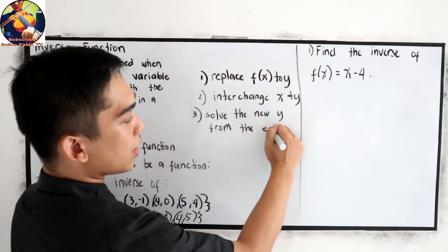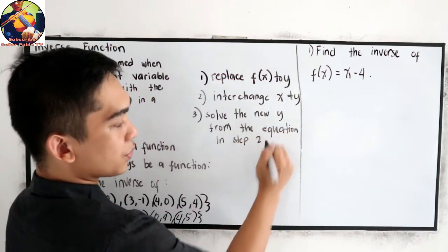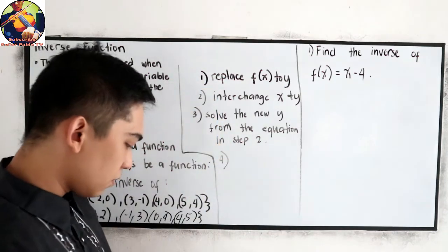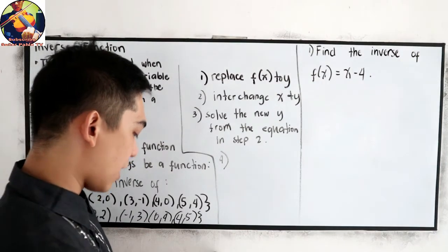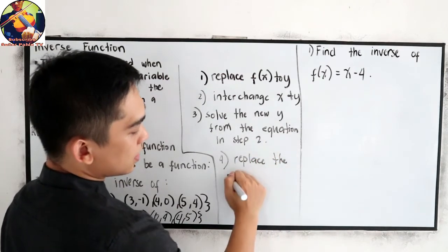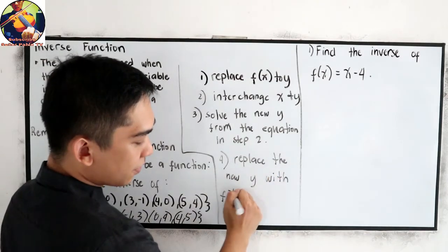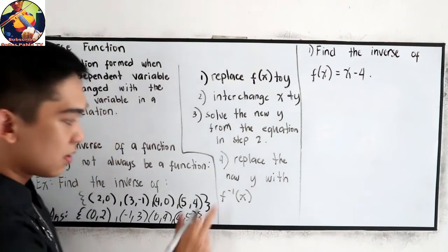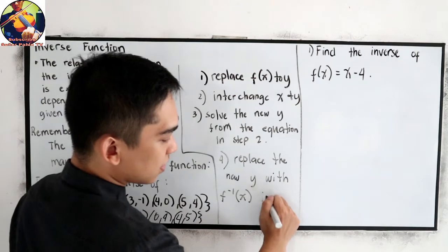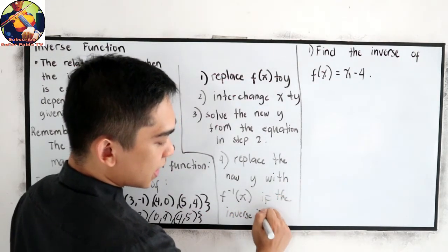And last, number four, replace the new y with f raised to negative one. That means inverse of x. This is the inverse of x if the inverse is a function.